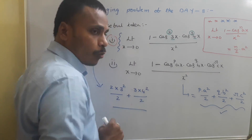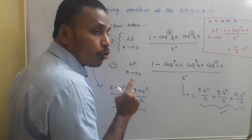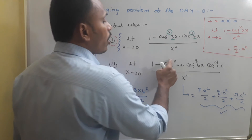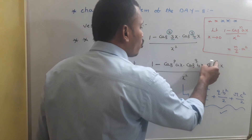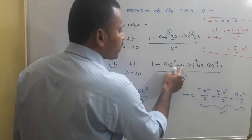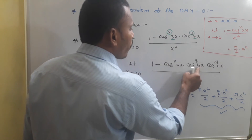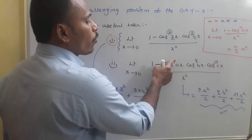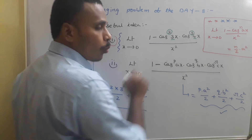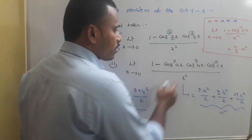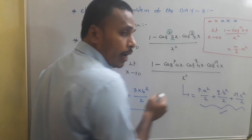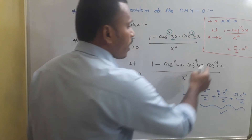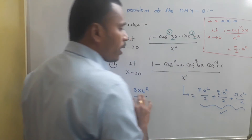For the problem limit as x tends to zero of (1 - cos^p(ax)·cos^q(bx)·cos^r(cx)) / x², the answer is p·a²/2 + q·b²/2 + r·c²/2. When the denominator is x², pay attention to the powers p, q, r and the coefficients a, b, c. The answer is (p·a² + q·b² + r·c²) / 2.